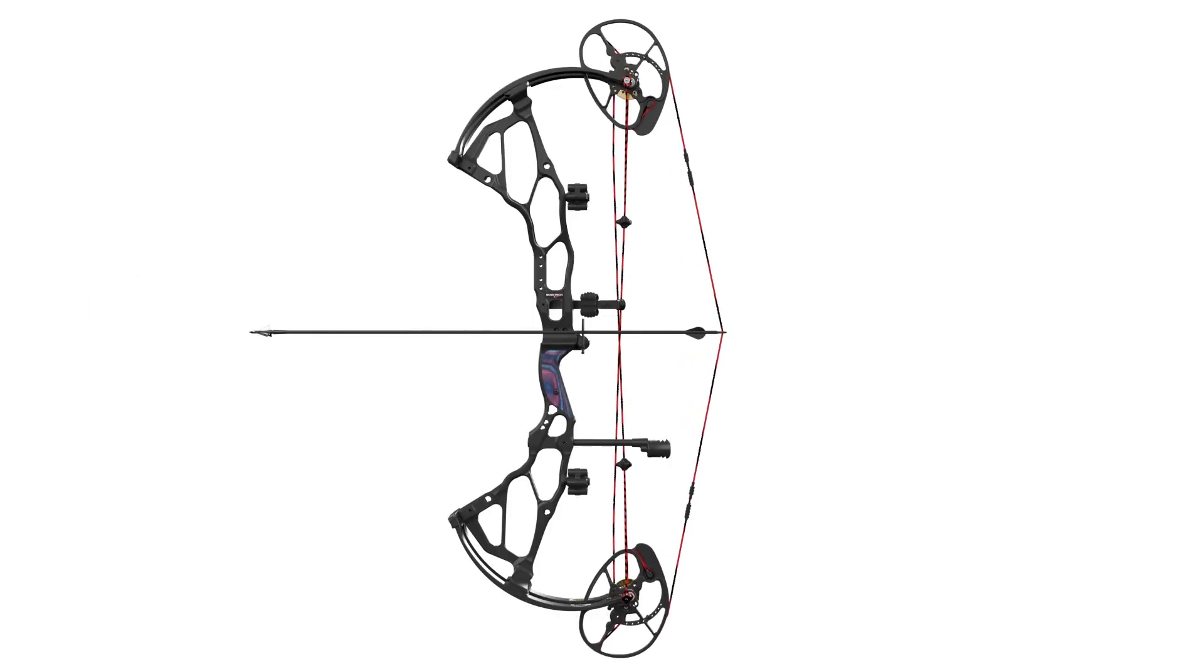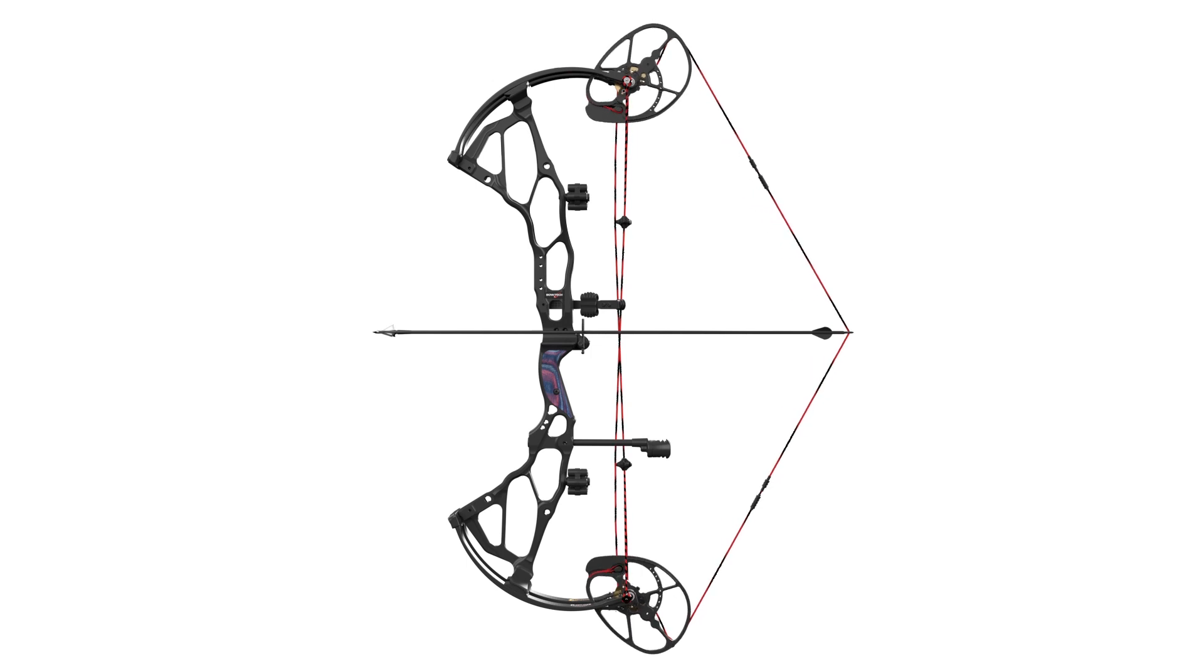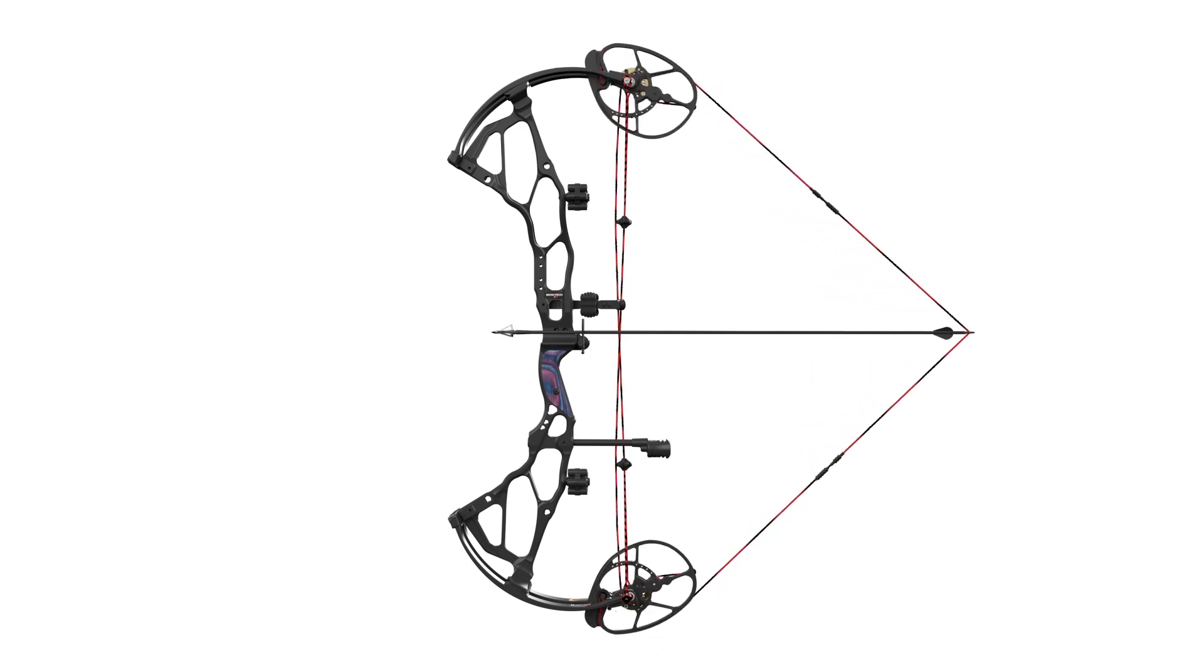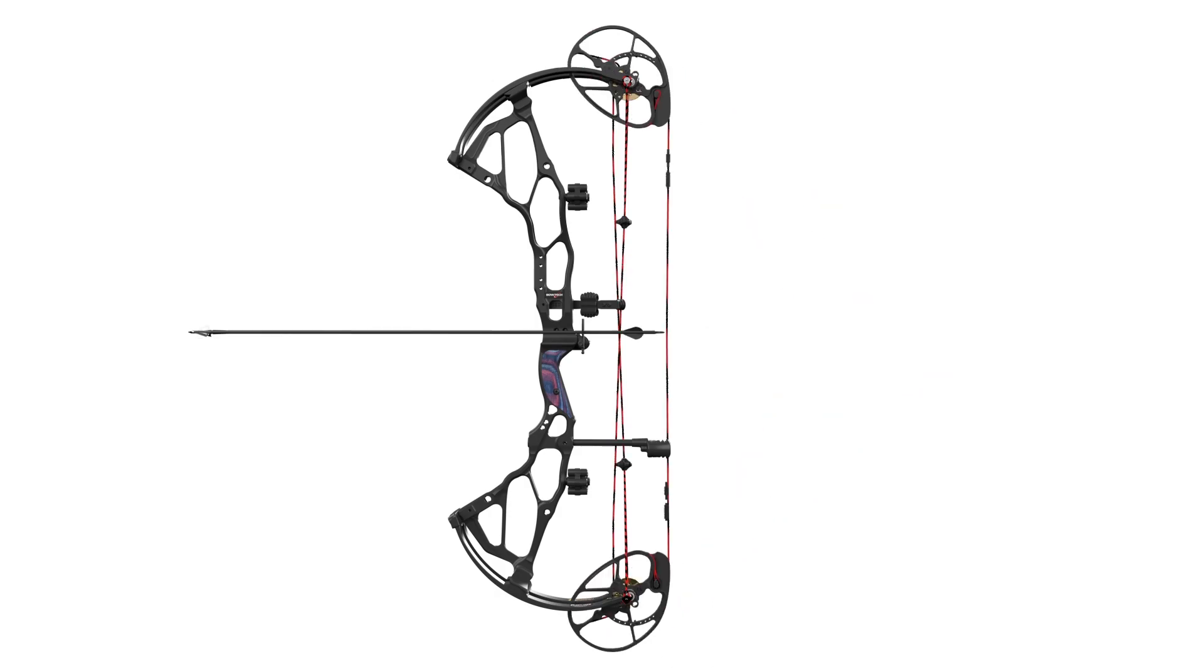By design, our binary cam system ensures that your knock always stays in the same place on the vertical plane, and that puts the knock directly behind your arrow's point. That means your arrow is coming out of the bow straight with as much energy as possible.